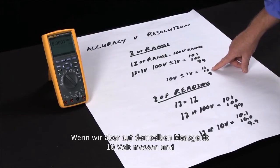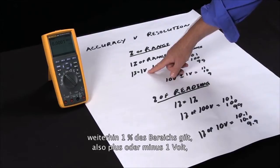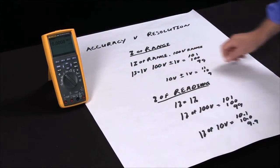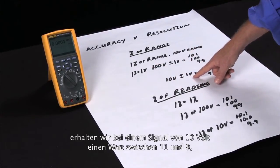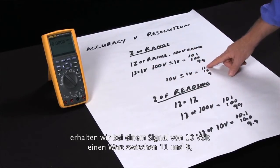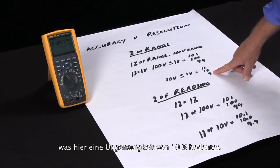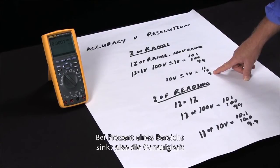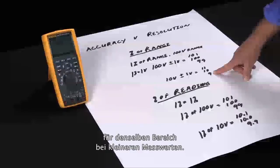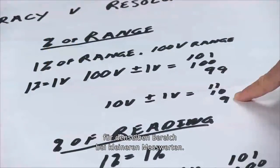But if we're measuring ten volts on this same meter, the one percent is plus or minus one volt. On a ten volt signal, plus or minus one volt gives us between eleven and nine, which is actually an inaccuracy of ten percent. So with percent of range, the accuracy actually decreases on the same range as you go down with the measurement values.